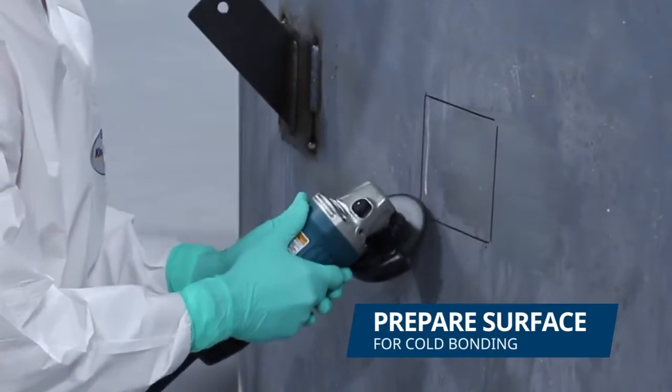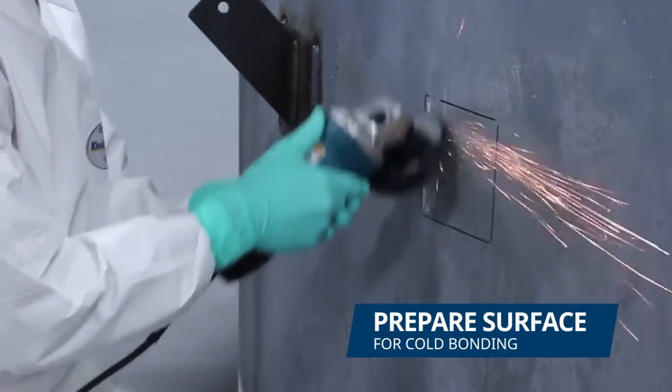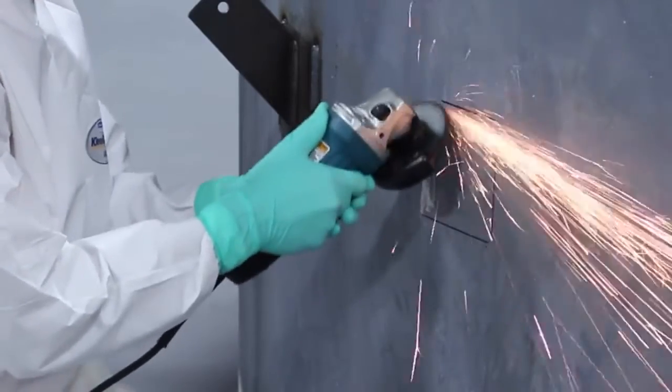For the cold bonding application, we prepared the area inside the marked perimeter since bonding is done on the whole surface of a bracket.